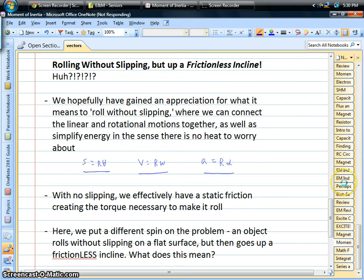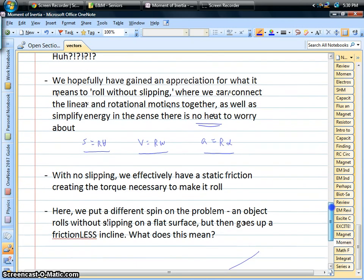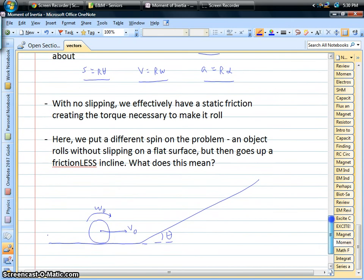That takes out an extra unknown from the problem and makes life a little bit easier for us, so that's always a good thing. There's also no heat loss if there's no slipping, there's no kinetic friction, rather it's more of a static friction, what we call rolling friction. But no heat being produced, that's a good thing for energy.